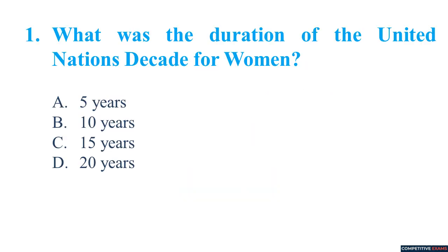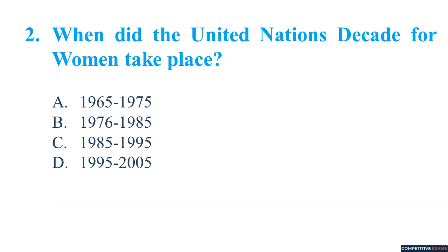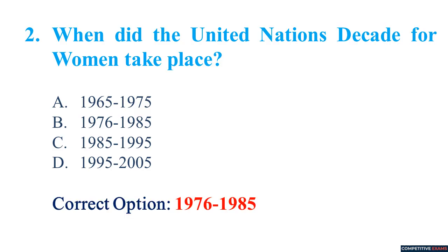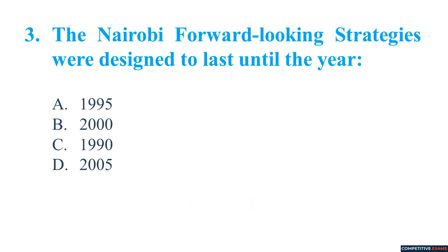What was the duration of the United Nations Decade for Women? 10 years. When did the United Nations Decade for Women take place? From 1976 till 1985. The Nairobi forward-looking strategies were designed to last until the year 2000.